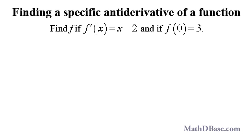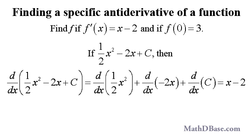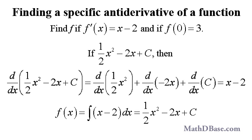Given a function, there is exactly one antiderivative of the function that passes through a given point in the xy-plane. For example, let's find the function f whose derivative is x minus 2 for all x, and passes through the point (0, 3). Any function f that has the form half x squared minus 2x plus a constant c will have a derivative equal to x minus 2. So the general antiderivative of x minus 2 is half x squared minus 2x plus c. In symbols, f of x is equal to the indefinite integral of x minus 2, which equals half x squared minus 2x plus c.